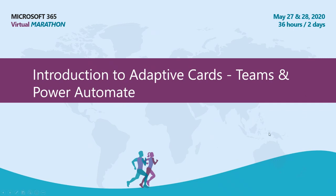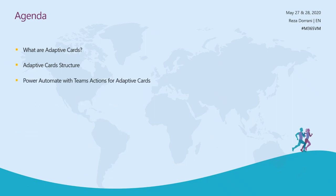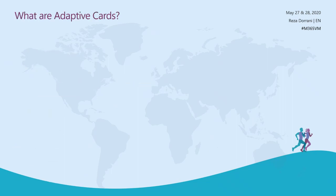The agenda for the session is: we will look at what adaptive cards are, what a simple example looks like, the structure of an adaptive card, how we can leverage Power Automate with the new Teams actions for adaptive cards, demos, and some learning resources to help you get started.